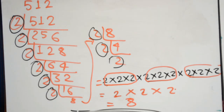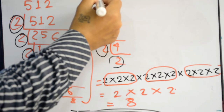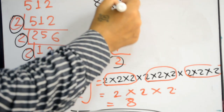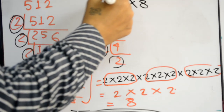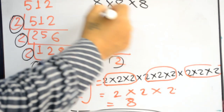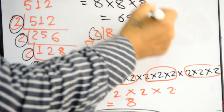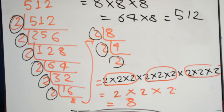We can also verify this. Is 8 really the cube of 512? We multiply 8 three times: 8 times 8 is 64, and 64 times 8 is 512. Yes, that confirms it. I hope you got some ideas about cube and cube roots. Thank you for watching this video.